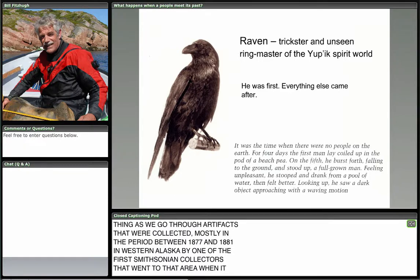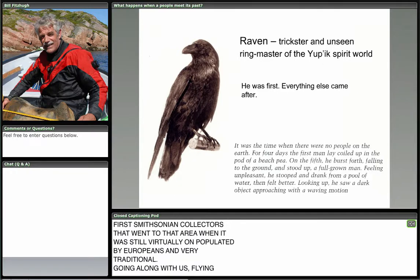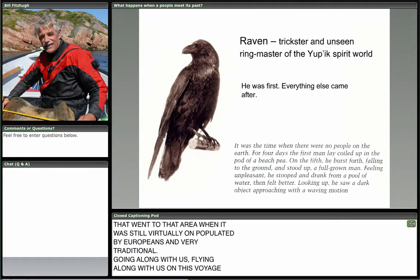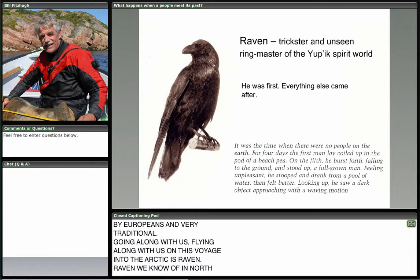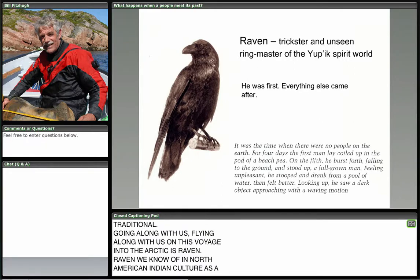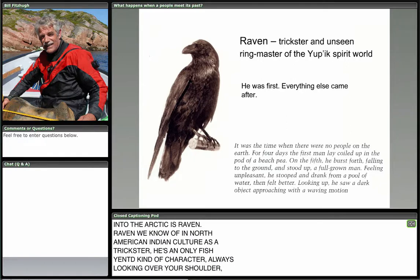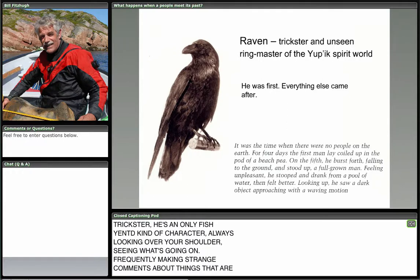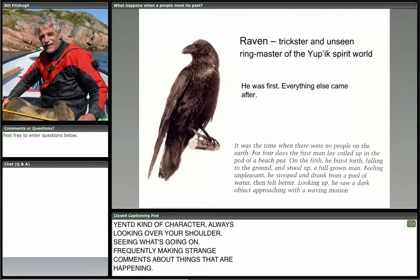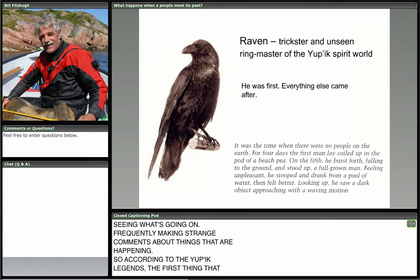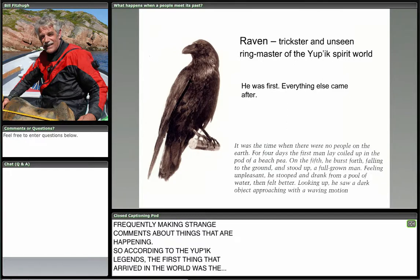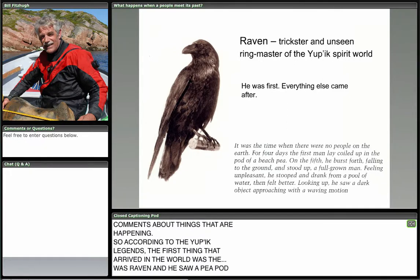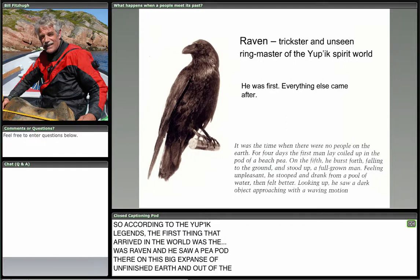Flying along with us on this voyage into the Arctic is Raven. In North American Indian culture, Raven is a trickster — an omniscient character, always looking over your shoulder, seeing what's going on, frequently making strange comments. According to Yup'ik legends, the first thing that arrived in the world was Raven. He saw a peapod on this big expanse of unfinished earth, and out of the peapod popped the first man and woman. That's how their culture started.